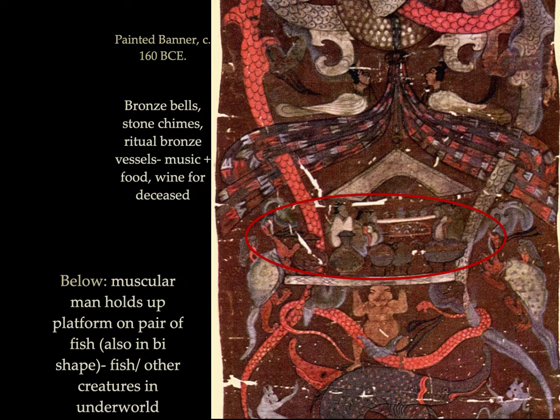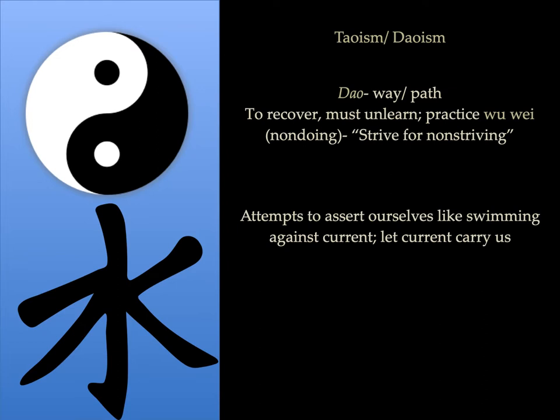Below you see a muscular man who holds up a platform on a pair of fish. Now let's discuss Taoism. The Tao — the way or path — is a central component. For one to recover, one must unlearn and practice wu-wei, or non-doing, and strive for non-striving. It can be understood as you are attempting to go against the flow of the universe — attempting to assert ourselves, like swimming against the current, and instead letting the current carry us.